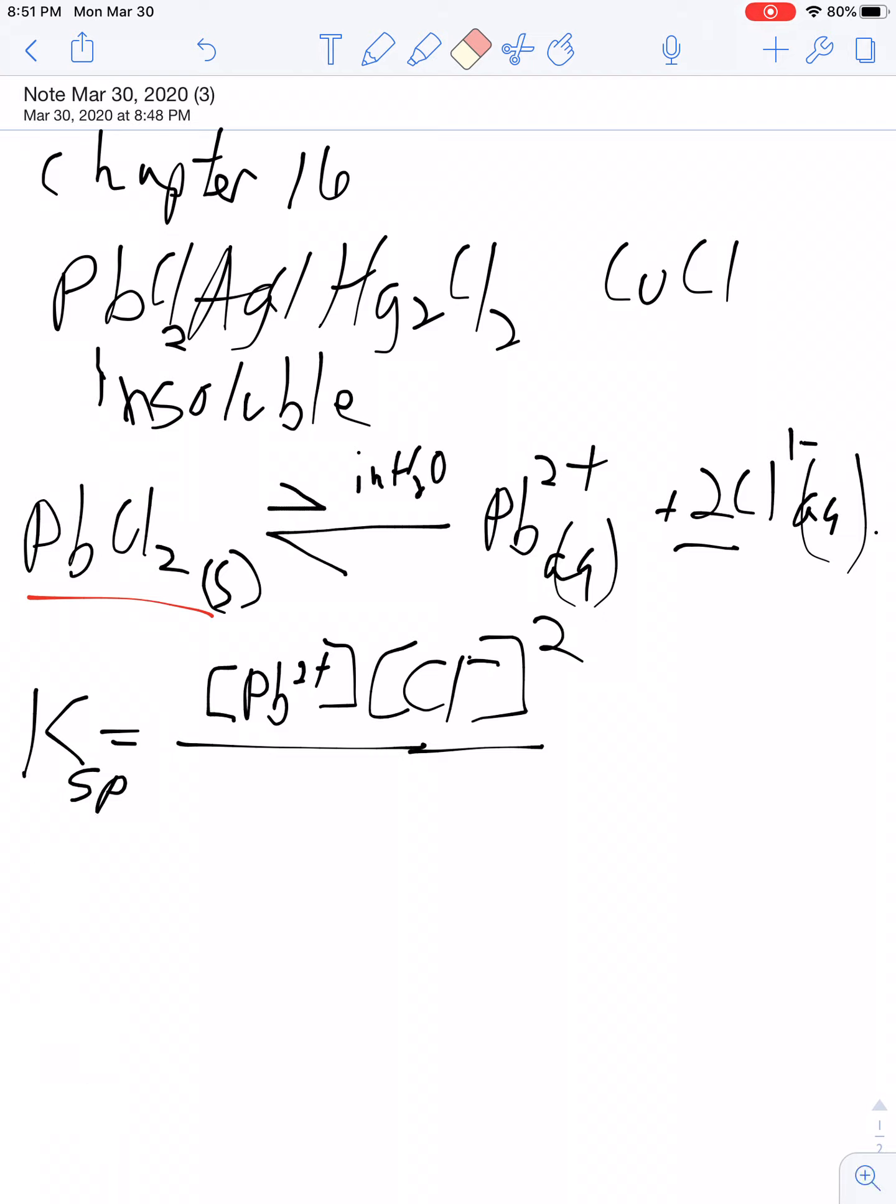So how much will this stuff dissolve? What will the molarity be of those two ions, the lead and the chloride ions? In order to solve that, we need to know the Ksp. We look it up on Table 16.1, and the Ksp is 1.6 times 10 to the negative fifth.